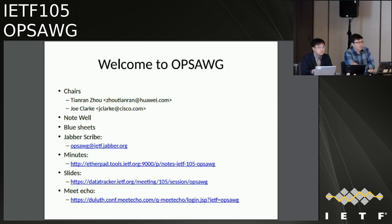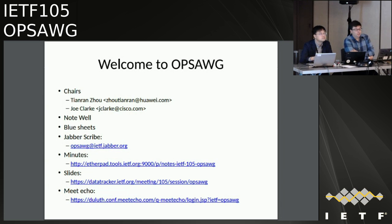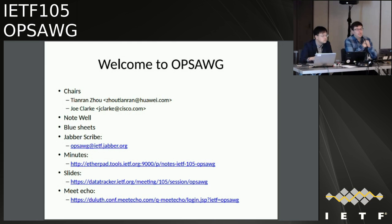We will kick this off and we have a fairly packed agenda, though not as packed as some in the past. The good news is we've seen a lot of mailing list activity this time around. We've got some newly adopted documents as well, so we'll cover those. After the Ops Area Working Group portion, we will hand it over to our area directors to do the Ops Area portion of the meeting. Before we go any further, may I ask for a Jabber Scribe?